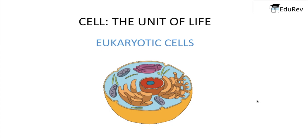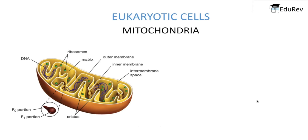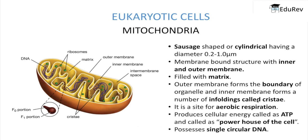Let us begin with mitochondria. Mitochondria is present inside the cytoplasm of the eukaryotic cell. It is a sausage or cylindrical shape having a diameter of 0.2 to 1.0 micrometers. Mitochondria is a membrane-bound structure with inner and outer membrane. Inside, it is filled with the matrix. The outer membrane forms the boundary of this organelle, and the inner membrane forms a number of infoldings called cristae.